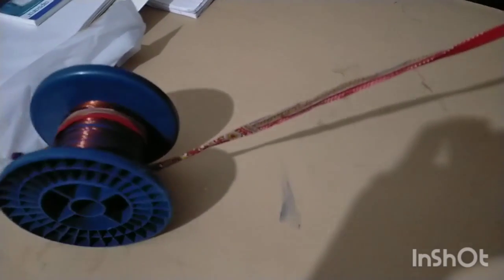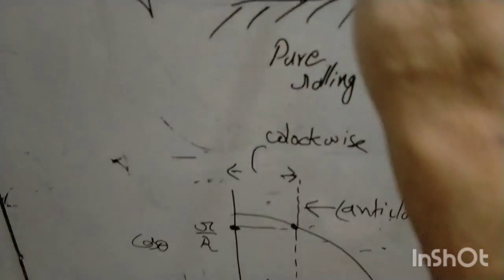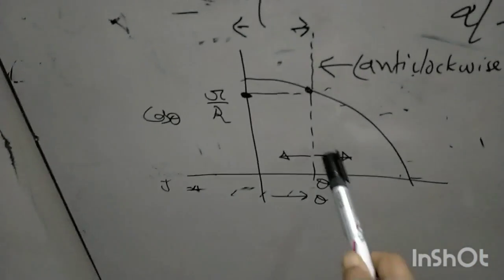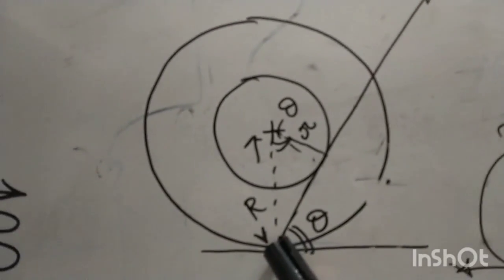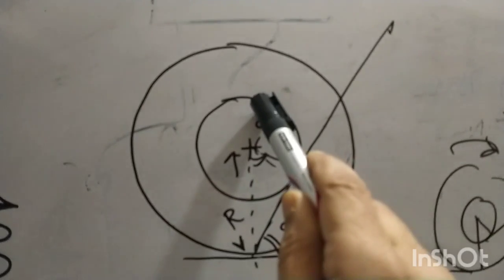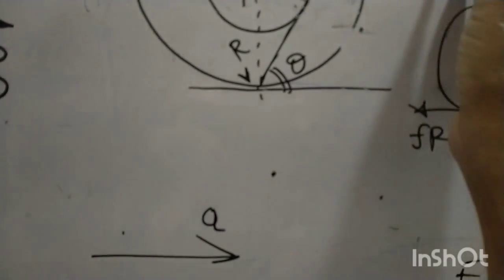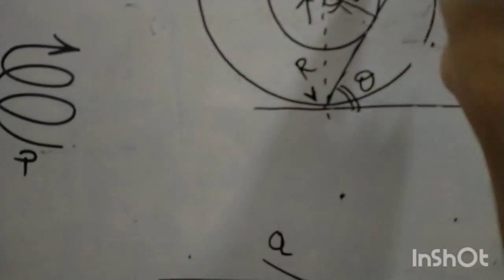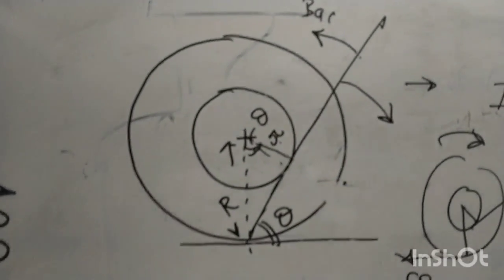At lower angles the spool rotates clockwise and moves forward; at larger angles it rotates anti-clockwise and moves backward. Certainly at 90 degrees it moves backwards. The most interesting part: if you draw a line from the contact point as a tangent to the inner radius, that line defines the critical angle theta critical. If the applied force angle is greater than this tangent angle it moves in one direction; if less, it moves the other way. At this tangent, cos θ equals r/R. I hope this helps!